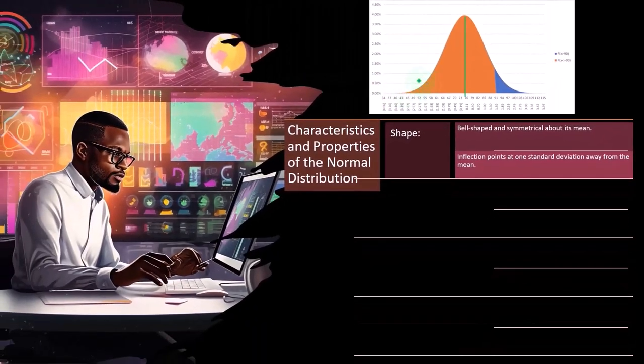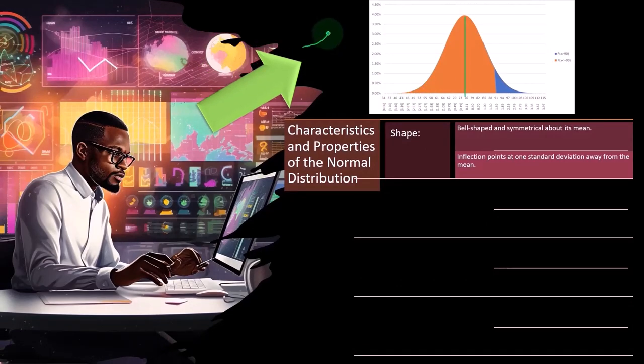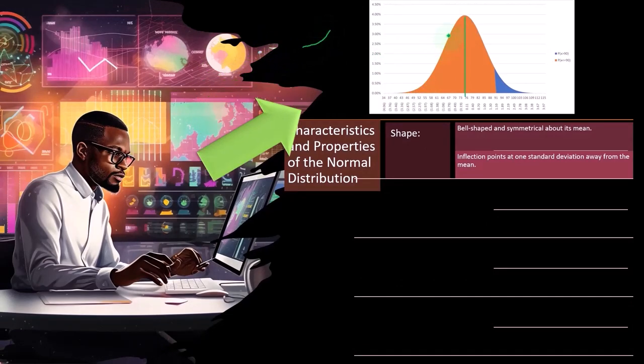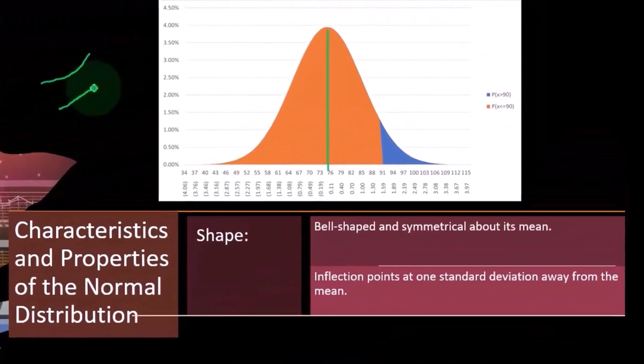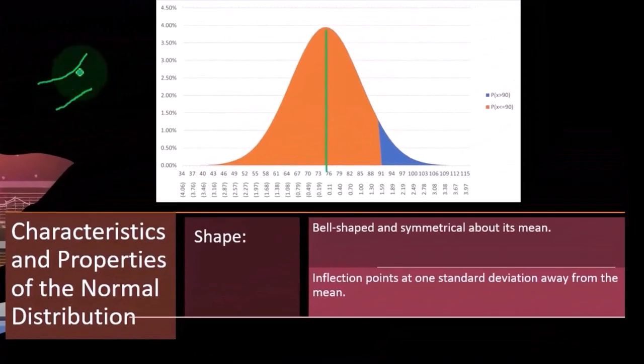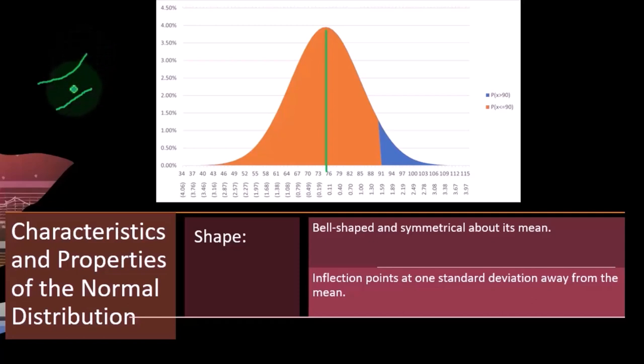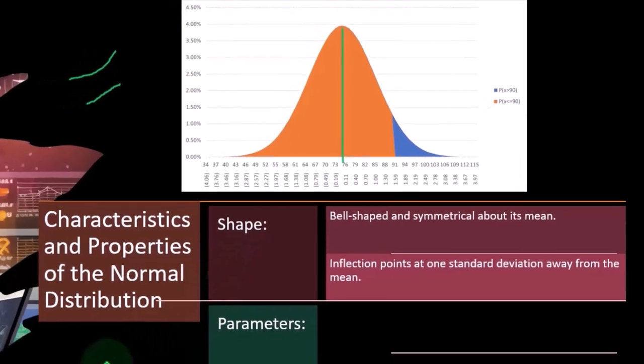So inflection points at one standard deviation away from the mean. We'll talk a little bit more about the standard deviation concept as it relates to the bell-shaped curve. But the point here is that you can see when you're down here, the concavity of the curve is up like this. So it's increasing at an increasing rate. And then somewhere up here, it's still going up, but it no longer is concaved up. It's concaved down. And that happens. The inflection point where that happens is at one standard deviation away from the mean.